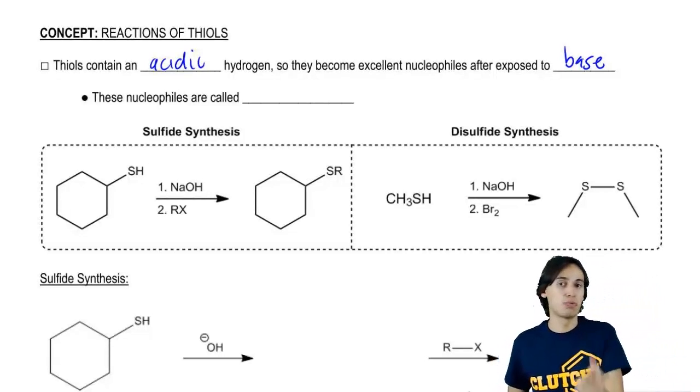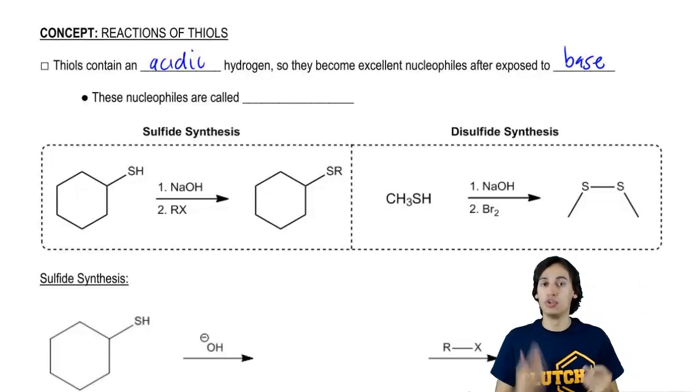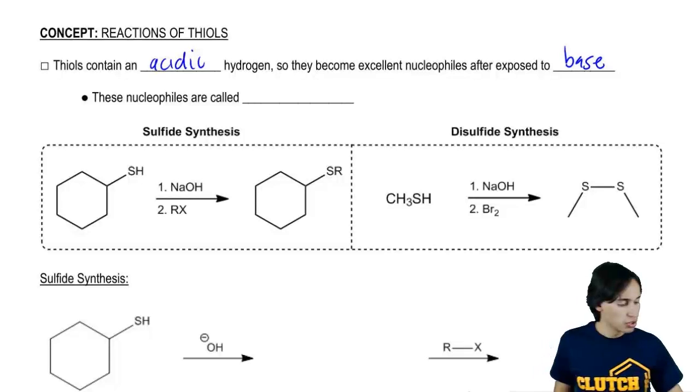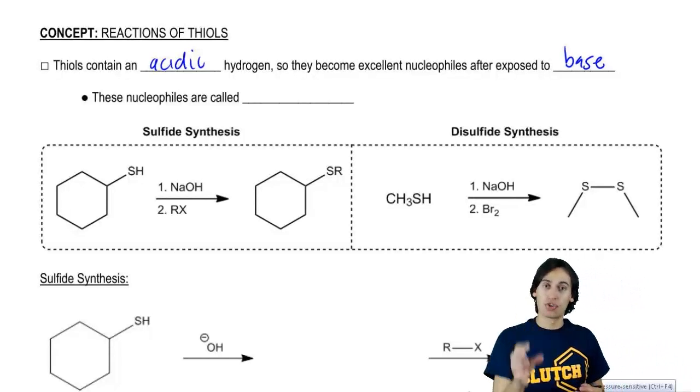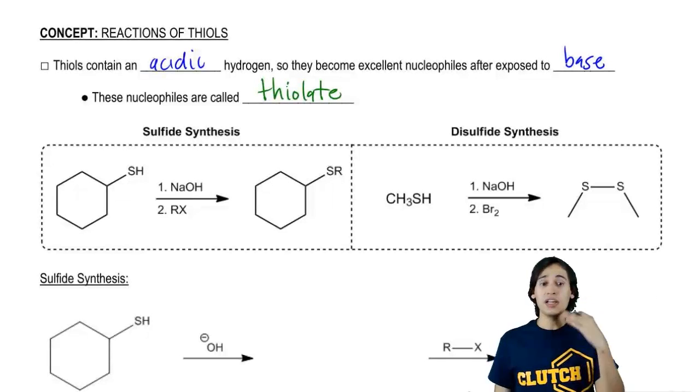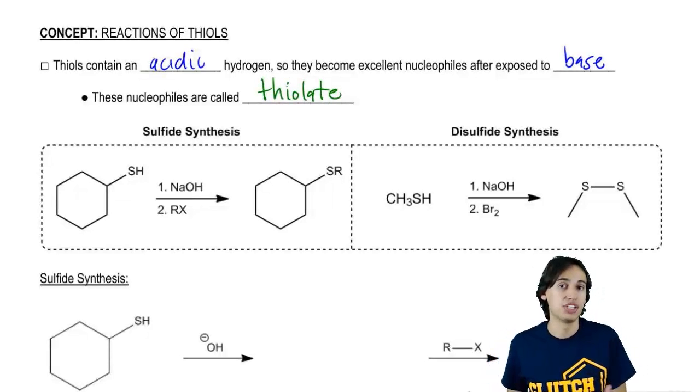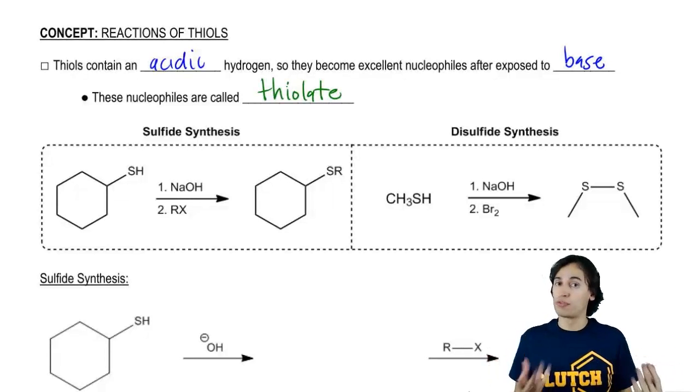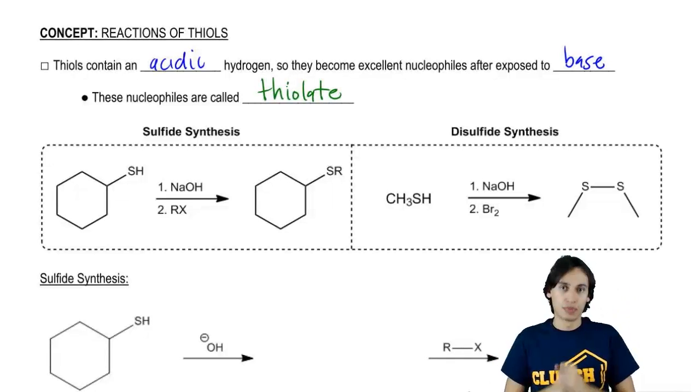So after you expose it to base, pull off that hydrogen, it's going to be a great nucleophile. Just so you guys know, that nucleophile, once the sulfur has a negative charge on it, is called a thiolate. So a thiolate nucleophile is going to be capable of forming a few different reactions. That's what we want to go over right now.